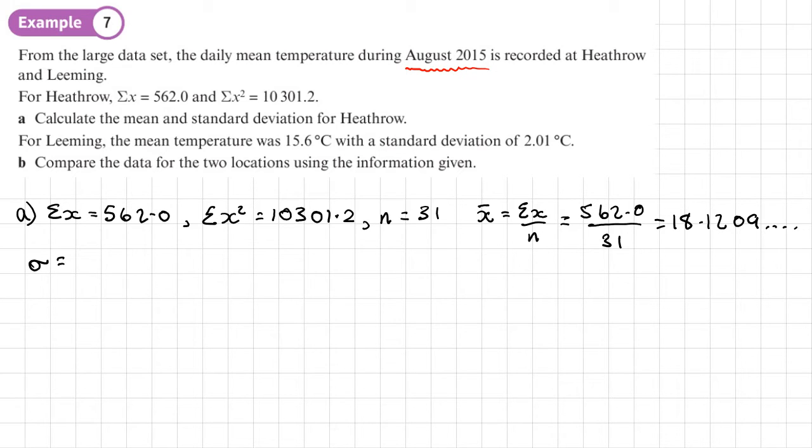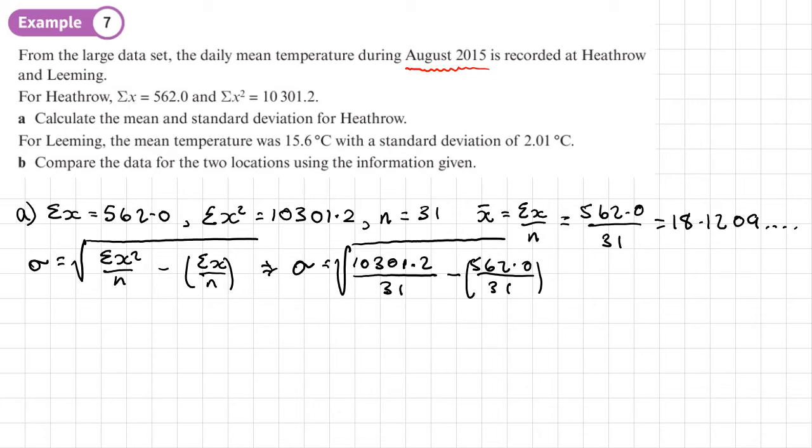Now for my standard deviation, that's going to be the square root of the sum of X squared over N minus the sum of X over N squared. Right, so that's going to be the square root of 10,301.2 over 31 minus the mean squared. Now this is the mean. I'm going to use this rather than that number there. So 562.0 over 31, and that needs to be squared. So let's work out what that gives us. So that is 1.9065.